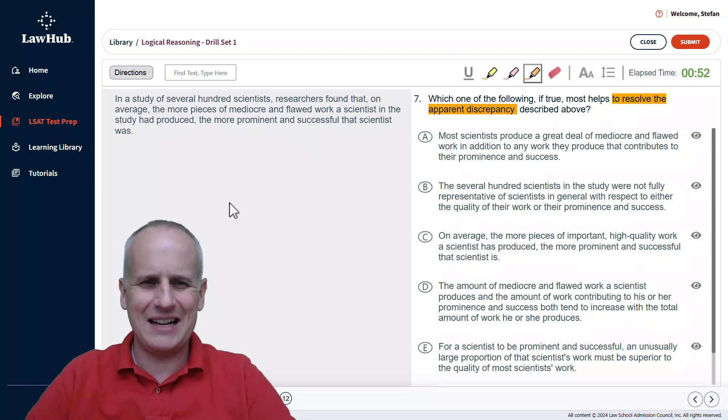We read the sentence on the left. In a study of several hundred scientists, researchers found that on average, the more pieces of mediocre and flawed work a scientist in the study had produced, the more prominent and successful that scientist was.